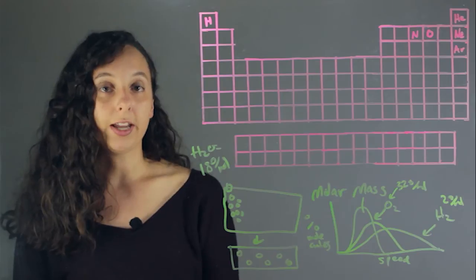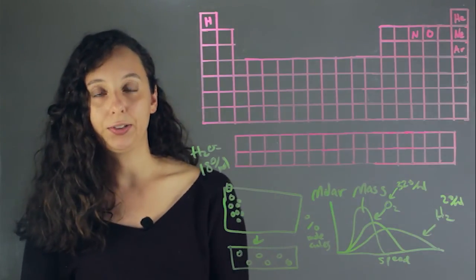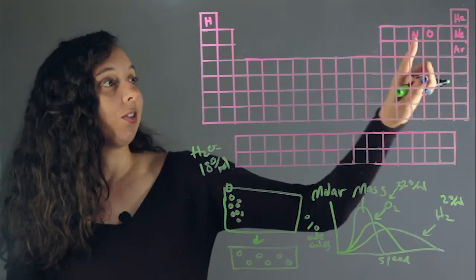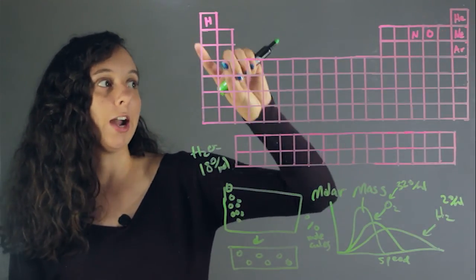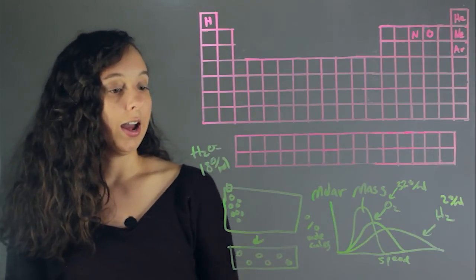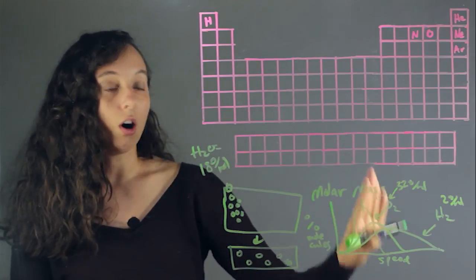And you can actually predict, based on these trends, how fast any of these gases are going to go. So nitrogen, a little bit slower than oxygen. Helium, pretty fast, but slower than hydrogen, and so on. And so this is the rate of diffusion for all the gases.